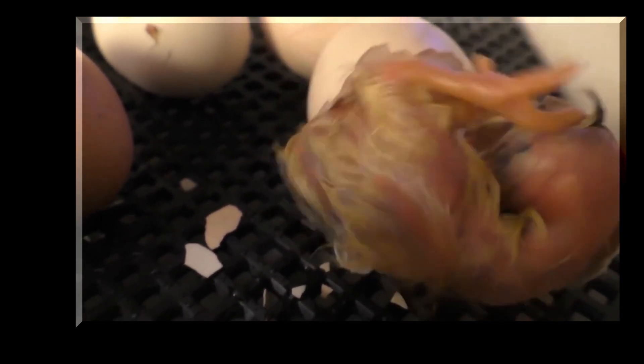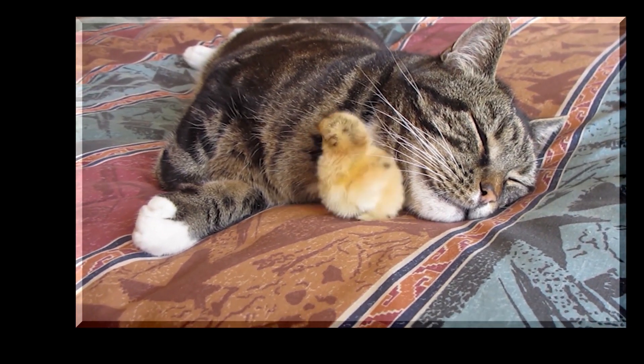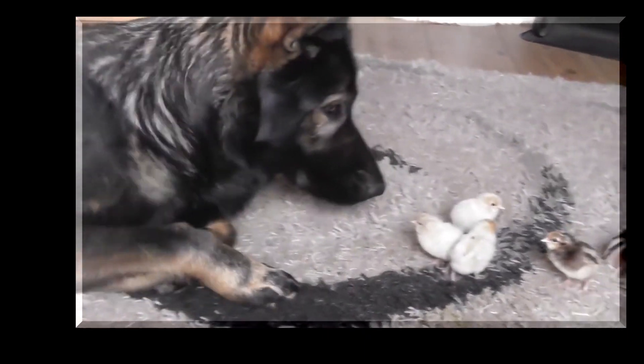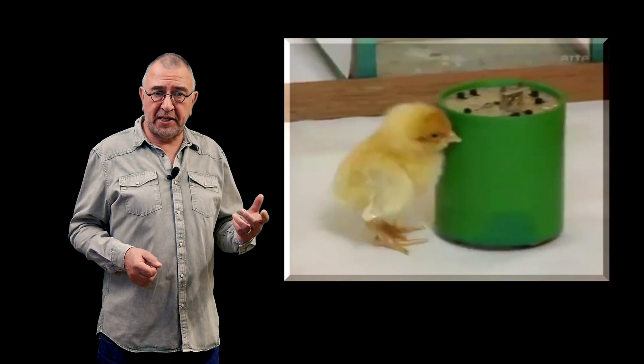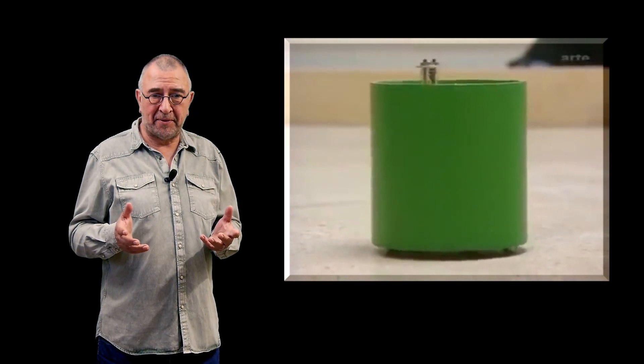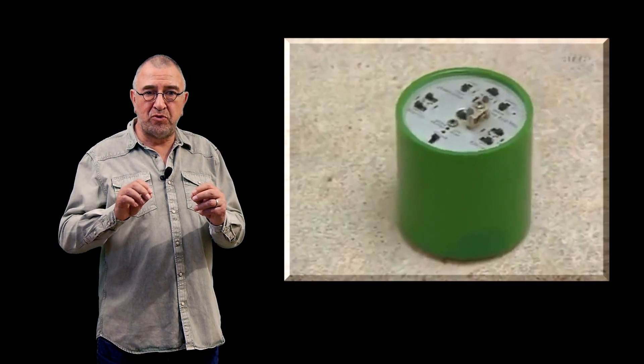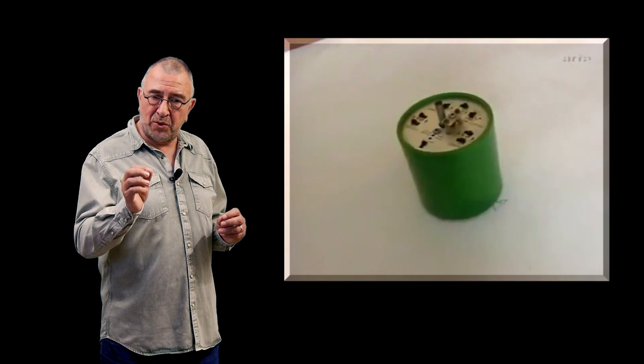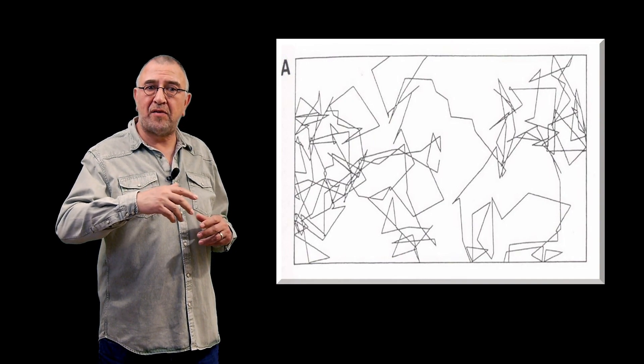If a chick is placed next to an animal or a mobile object from birth, it regards the animal or object as its mother. René Pioche therefore conditioned a large number of chicks so that they considered a small electronic robot to be their mother. This small robot is designed to carry out random movements on the basis of an electronic circuit. If we attach a plotter pencil to it and place it on a sheet of paper, it will generate random chaotic patterns.